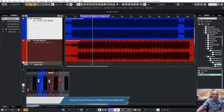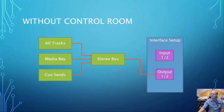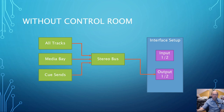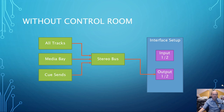But first, let me tell you about Cubase without the control room. How is the routing working? You can see that all tracks, the media bay, and the Qsense — everything is going to the stereo bus, and from the stereo bus everything is going to outputs one and two on your interface. So if you press F4, go to the audio connections and route your output to your interface where your speakers are connected, you can hear everything — the Qsense, the media bay.